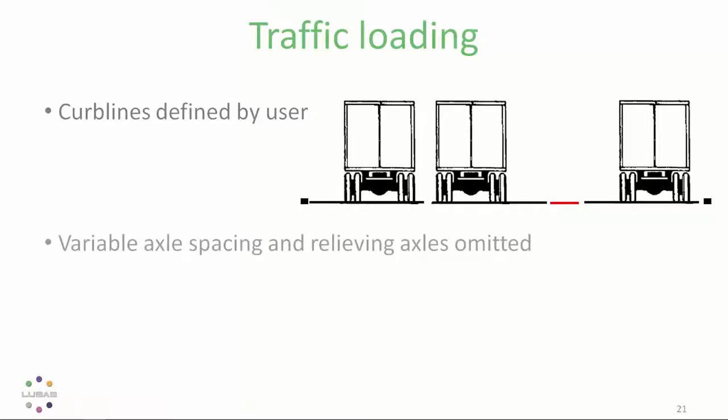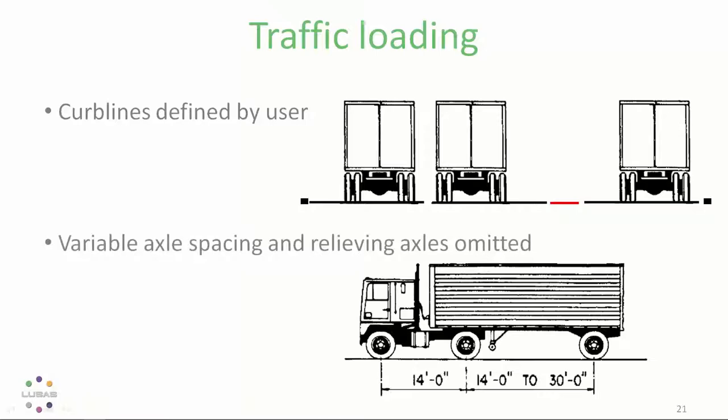The variable axle spacing in design trucks will take the most onerous value between 14 and 30 foot, which is for AASHTO, for each truck and any relieving axles are omitted. So sometimes for moments over internal supports, often two vehicles are used with a 90 percent factor.